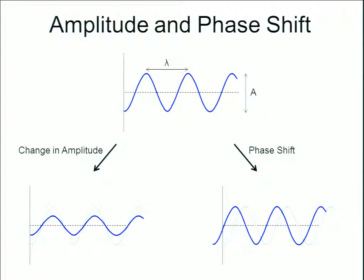Two types of information we can get: we drive the cantilever at its resonant frequency set point, and as we interact with the sample we can observe a change in amplitude, which provides information. We can also acquire phase shift data, which gives us different information as well.